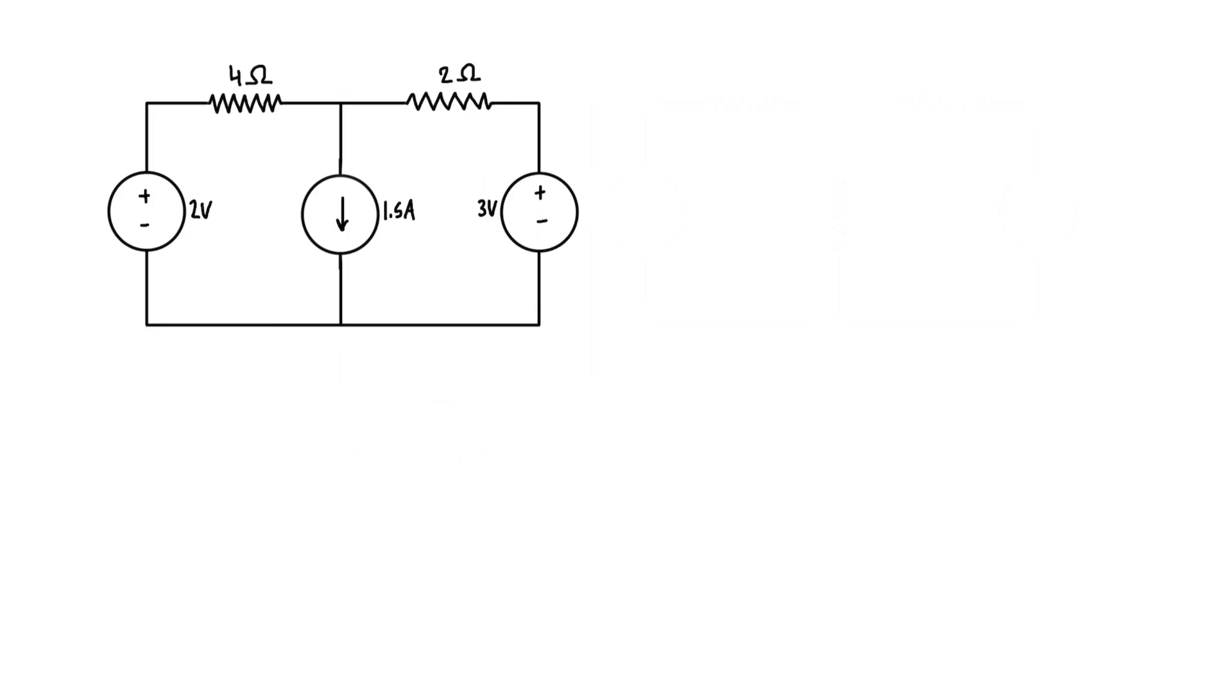Now, supermesh analysis is basically like mesh analysis, but it's what we have to do if we have a current source that's between two meshes or two loops. For example, if this was anything but a current source, you would just apply KVL around this loop, and then you would also apply KVL around this loop.